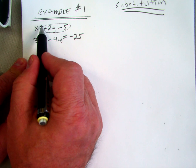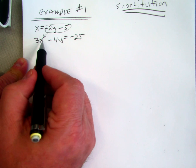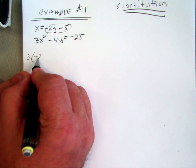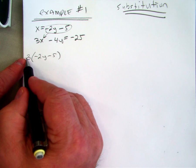It says it right here, x equals negative 2y minus 5. That means I can replace x with negative 2y minus 5. So 3x becomes 3 times negative 2y minus 5.